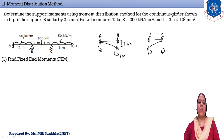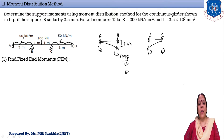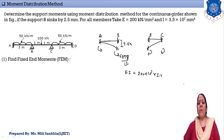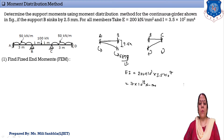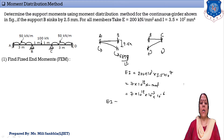The moment formula is 6EIδ/L². First we find the value of EI. E = 200 kN/mm² converted to Newton: 200 × 10³. I = 3.5 × 10⁷ mm⁴. So EI = 7 × 10¹² N·mm². Converting to kN·m²: multiply by 10⁻³ for Newton to kilonewton and 10⁻⁶ for mm² to m². Therefore EI = 7000 kN·m².